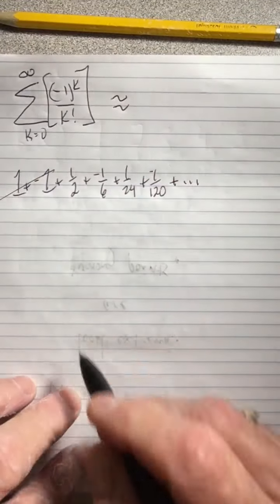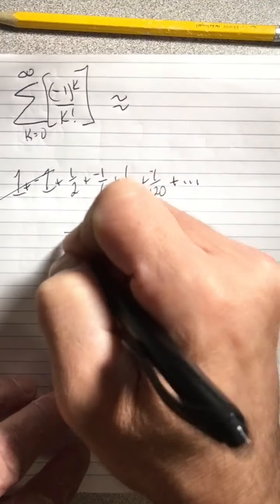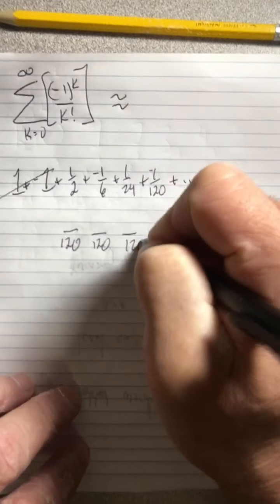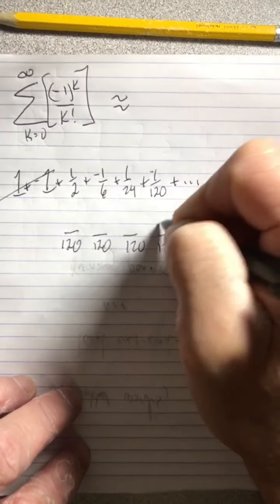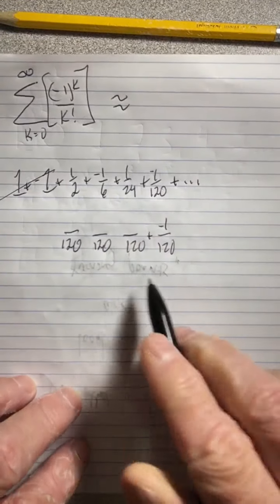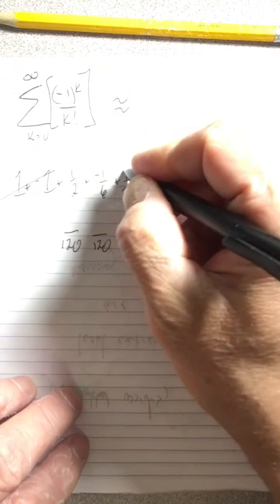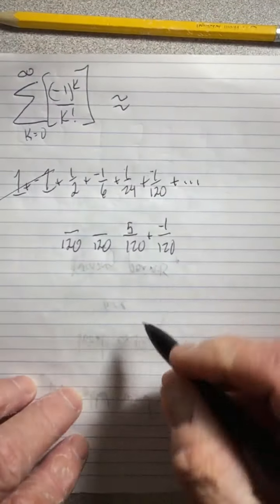Let's go ahead and add it up. Those two go to 0, and now I need a common denominator of 120. This one already has the common denominator. Now 24 goes into 120 five times, so I multiply the top and the bottom by 5, and I get that.